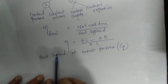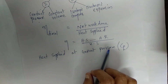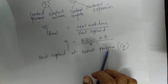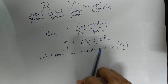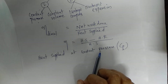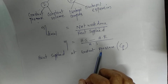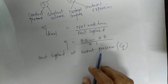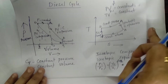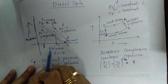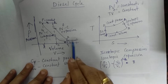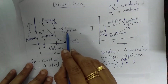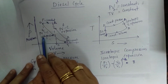Heat energy supply takes place at constant pressure, and heat energy rejection takes place at constant volume. Now let us look at the PV diagram and the TS diagram. In the PV diagram, we have the constant pressure process, constant volume process, isentropic expansion, and isentropic compression.